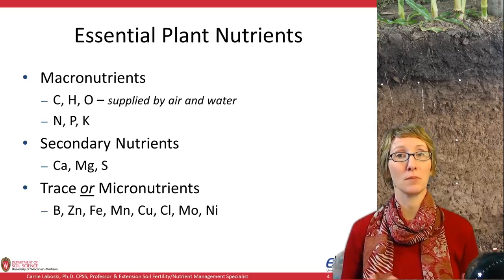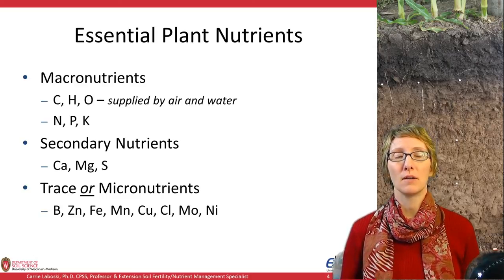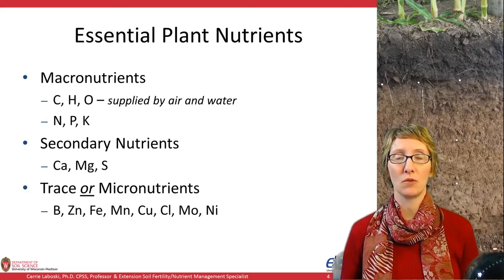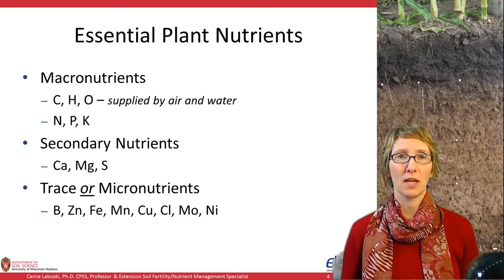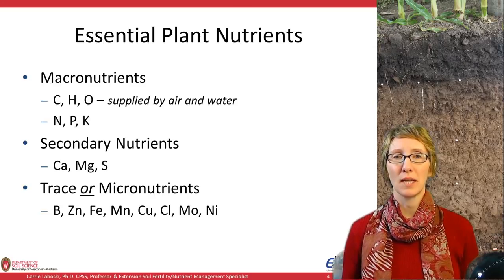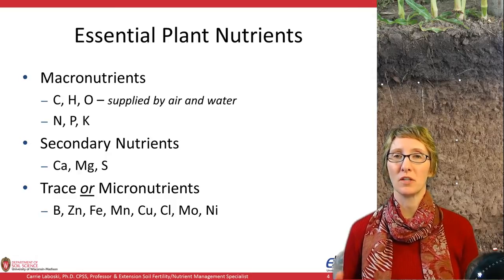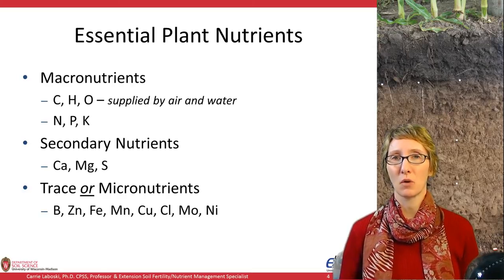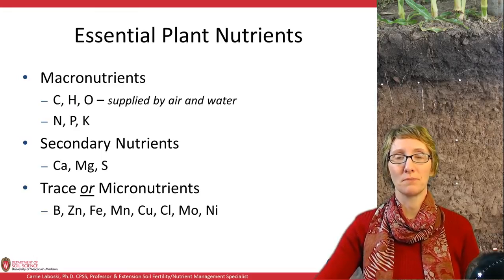Then we get into the micronutrients, or sometimes they're called trace elements. These are nutrients that are required in relatively small quantities, and there's a whole host of them: boron, zinc, iron, manganese, copper, chloride, molybdenum, and nickel. We need to keep in mind that whether we're talking about a micronutrient or a macronutrient, different plant species have different requirements. Some plants have a greater need for potassium than other plants, and when we get into the micronutrients as well, some have higher requirements than others — that's what makes each individual crop different and unique.